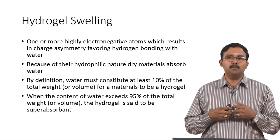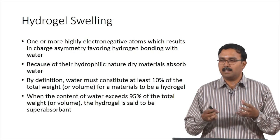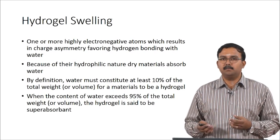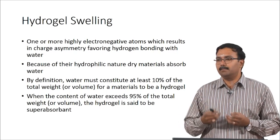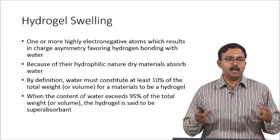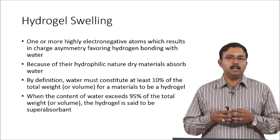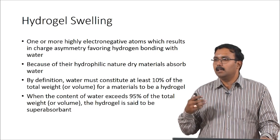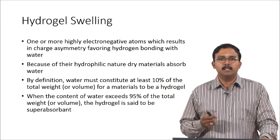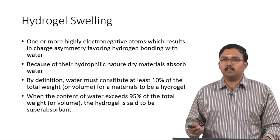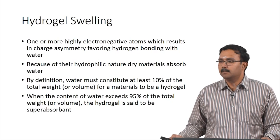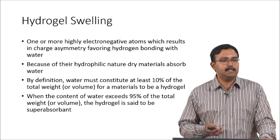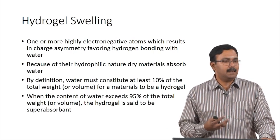Swelling is the most important parameter we look for in hydrogels. When one or more highly electronegative atoms are present, there is charge asymmetry which promotes hydrogen bonding with water, so a lot of water is retained. A dry hydrogel is called a xerogel — when placed in water it will start swelling and absorbing a lot of water. By definition, water must constitute at least 10 percent of the total weight of a material for it to be called a hydrogel. In some cases, water content can exceed more than 95 percent of the total weight or volume, and these hydrogels are considered super absorbent.